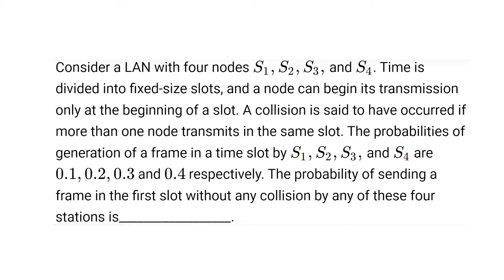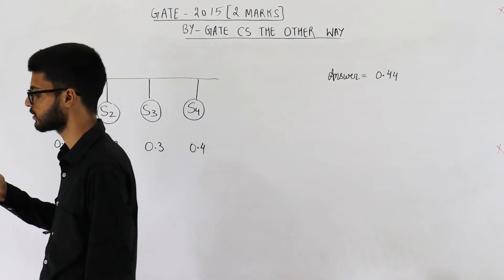The probabilities of generation of a frame in a time slot by S1, S2, S3, and S4 are 0.1, 0.2, 0.3, and 0.4 respectively. The probability of sending a frame in the first slot without any collision by any of these four stations is...